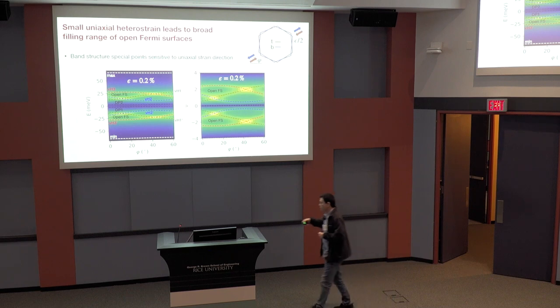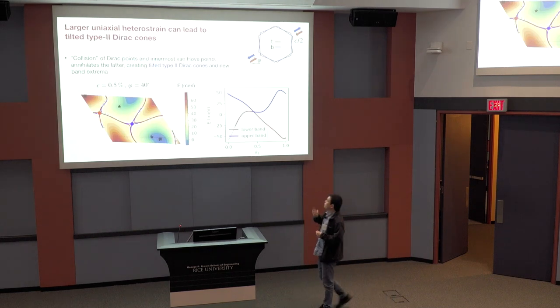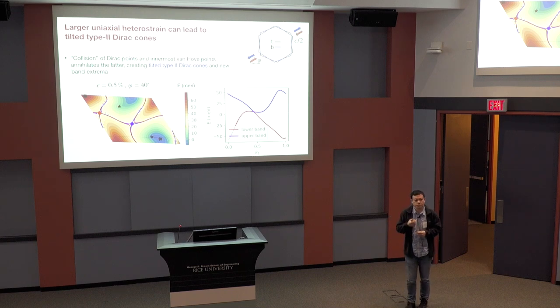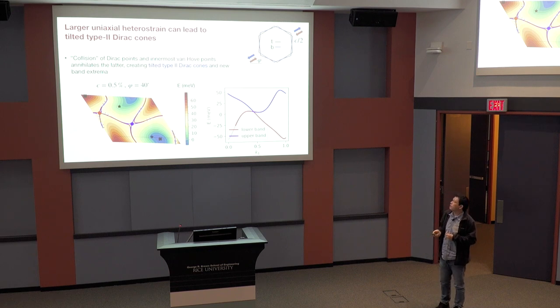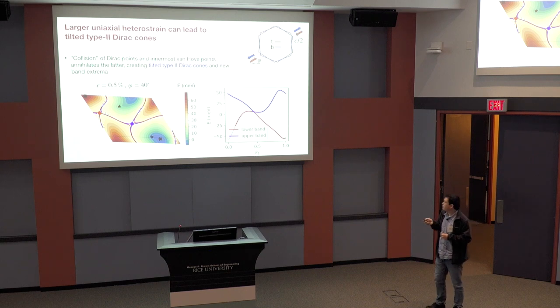And also like to note in passing, if we go to larger values of the strain by larger is 0.5% of the strain, you actually can create a tilted type 2 Dirac cones. And the details, how this happens and how that's actually one of the points also vanishes, and that's constrained by the topology of this manifold. And if you're interested, we can definitely discuss that later.